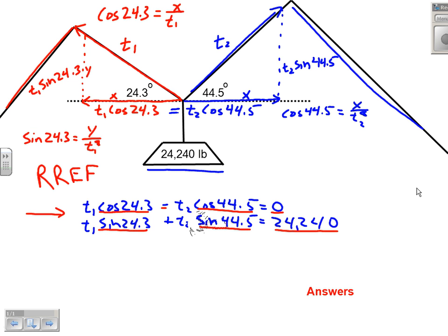We've got technology that will do that for us. The nice thing on our TIs is, if we go into a matrix, we don't have to figure out what cos 24.3 is and enter some approximate decimal. We can represent in our 2x3 matrix: this is just cos 24.3, provided your calculator is set in degrees, then negative cos 44.5 and a zero. Second row: sin 24.3, sin 44.5, and 24,240.